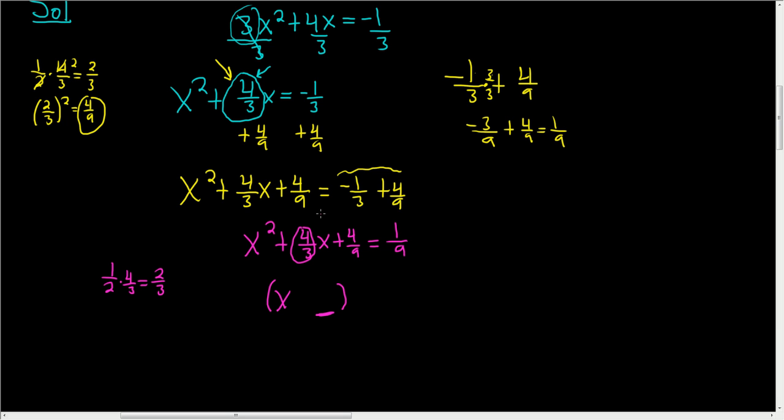This always works every single time. Just take this number and divide it by 2 or multiply by 1 half. In particular, it's a positive 2 thirds. So we have positive 2 thirds. And this is being squared. And this is equal to 1 ninth.